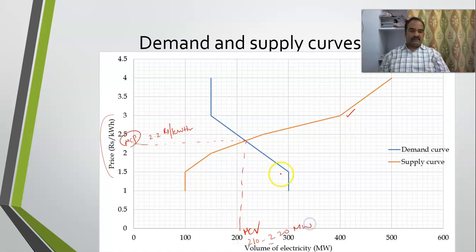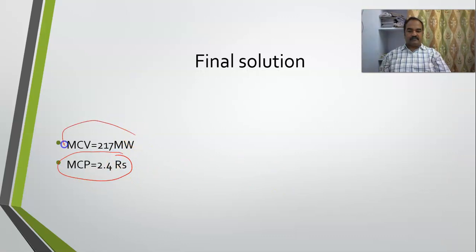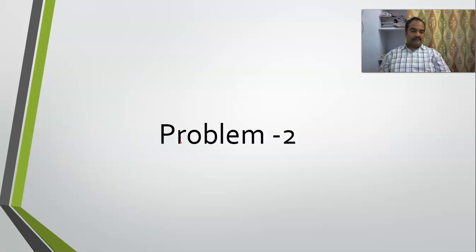This is the way you determine the demand and supply curve. The MCP is somewhere around 2.4 whereas the MCV is somewhere around 217 — this is the intersection we have seen.